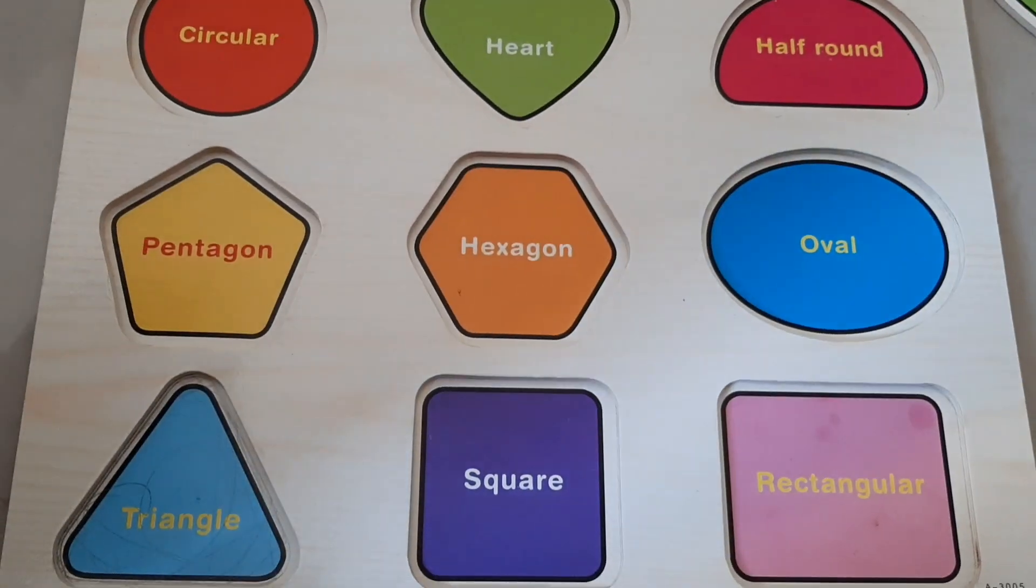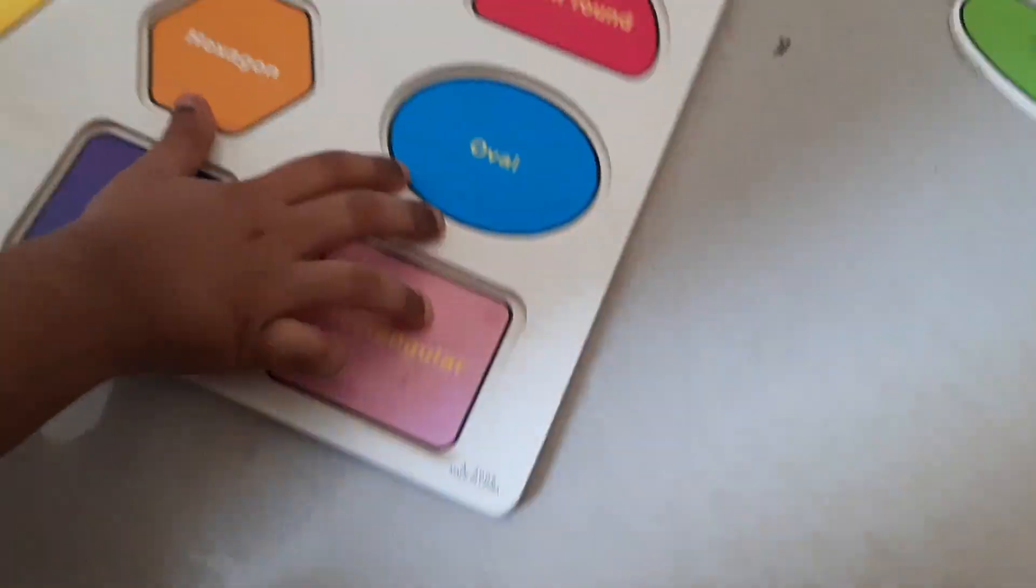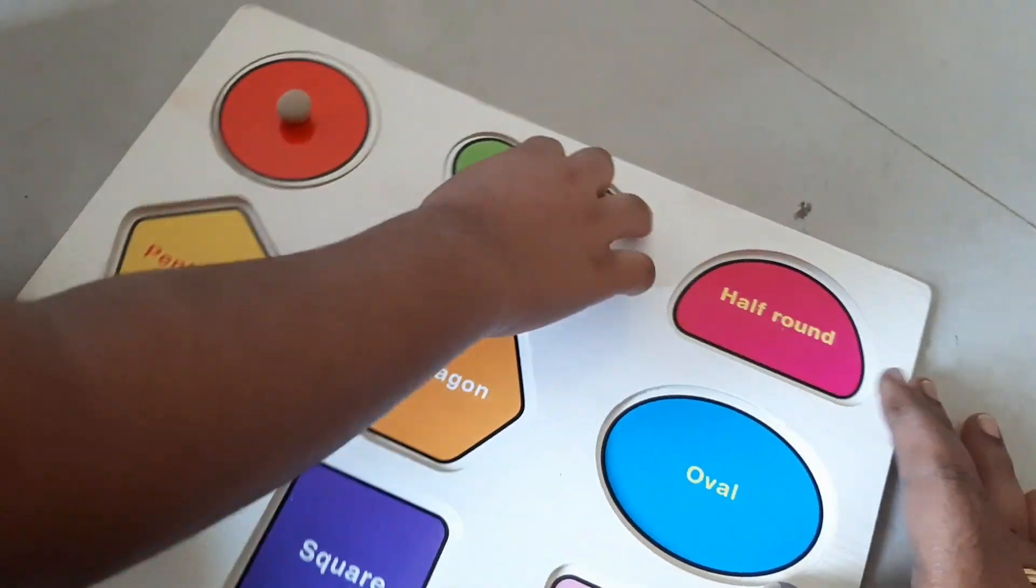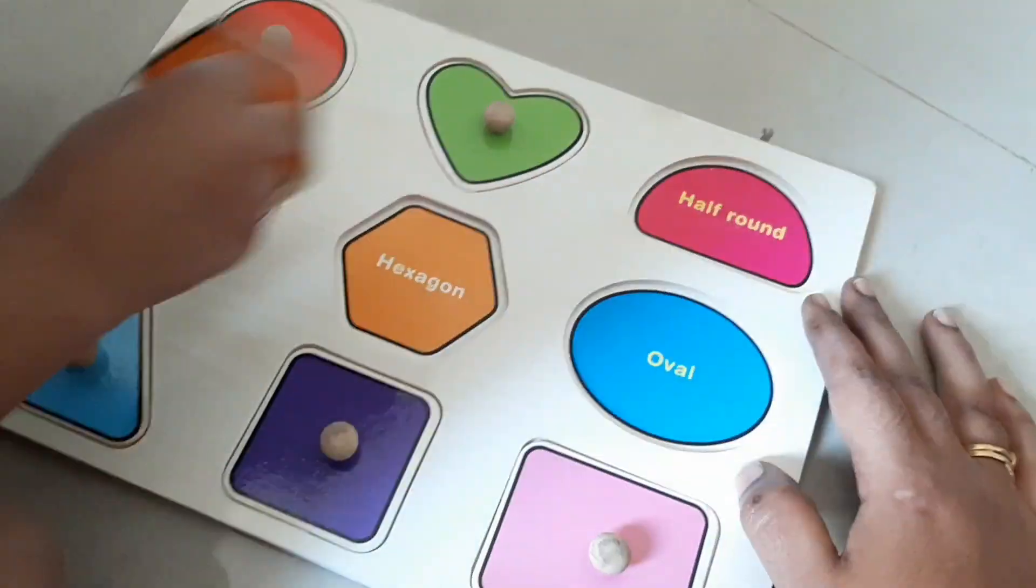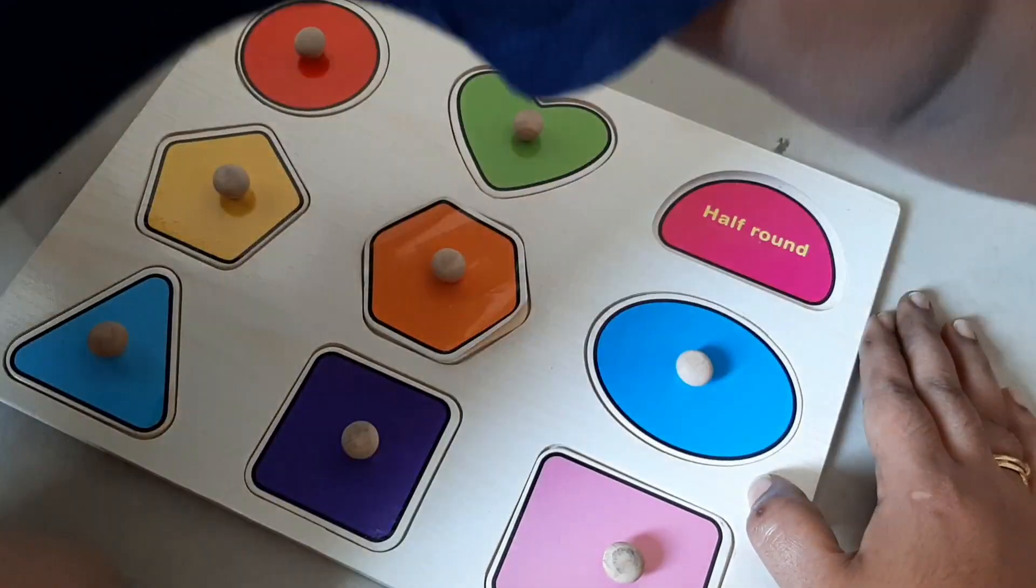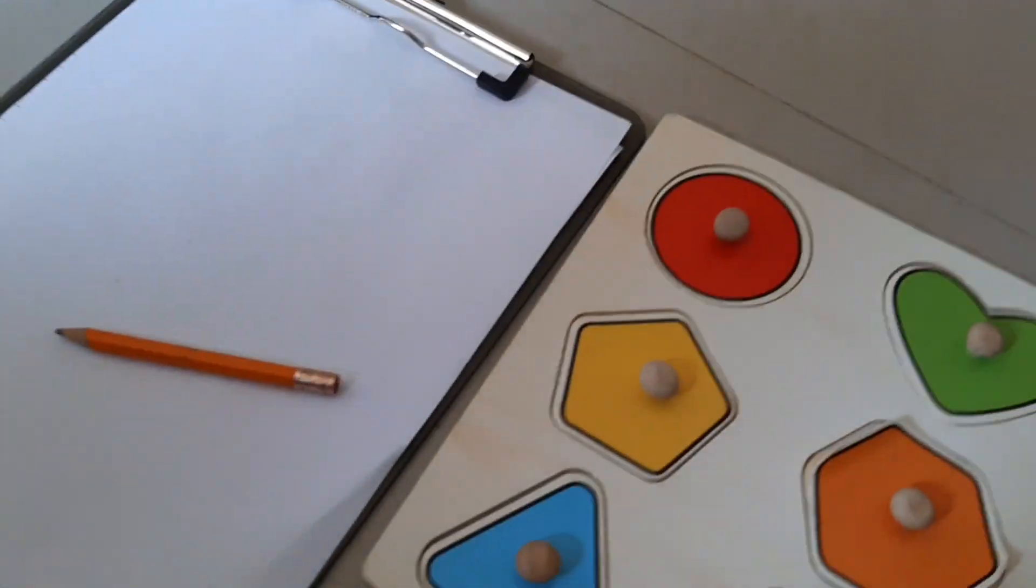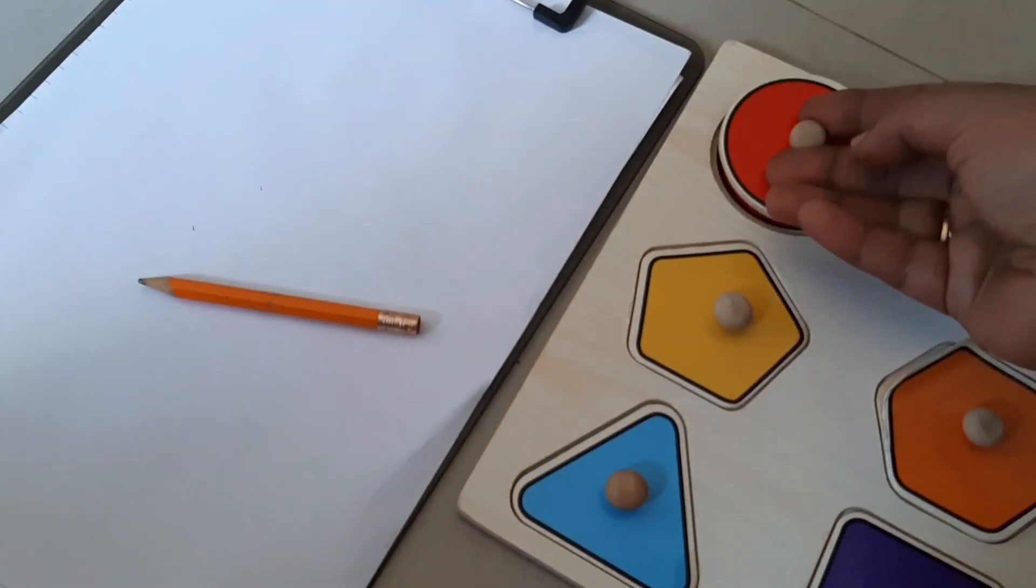Different kinds of shapes. Toddlers learn nine shapes with different colors. It's a wooden board. There is a small handle. With the help of this handle we can take it off to see the names. This helps the toddlers to find out the names. It helps in different ways.